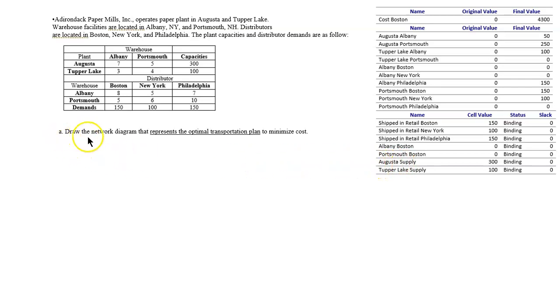The first question is draw the network diagram that represents the optimal transportation plan to minimize cost. Let's use the first two letters to describe the places because you have more than one A's. The first thing we see is that Augusta and Tupper Lake, I'll use TL for that.